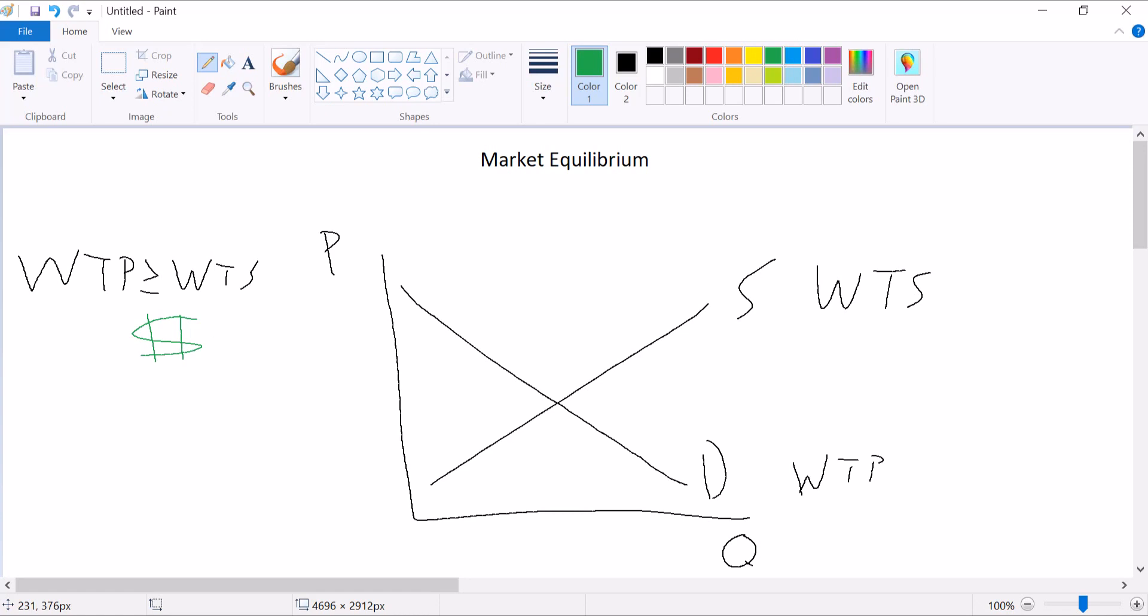Let's look at that on the graph here. Let's start from left to right on the quantity axis. So we'll start way over here. Over here, the willingness to pay is up high. The willingness to sell is down low. There's room for a transaction that benefits buyer and seller, and so they'll do it. They'll trade.